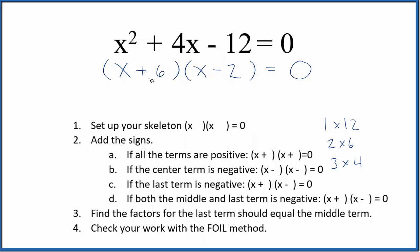Let's check this with the FOIL method. We'll multiply the first terms, that's x times x, x². The outside terms, x times negative 2, that's negative 2x. Inside, that's 6x. And the last terms, 6 times negative 2, that's negative 12. That should equal 0.